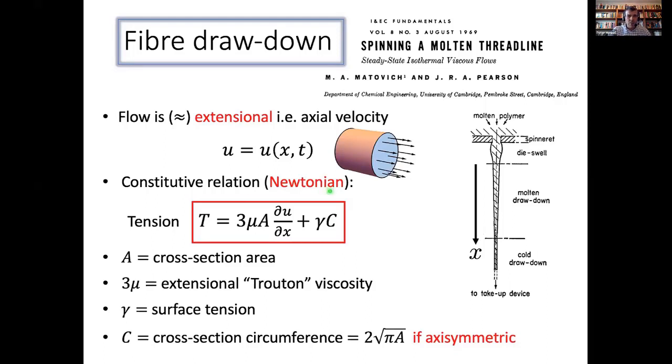And then you've got a constitutive relation between the tension in the fibre and the rate of extension. And notice I'm sticking to Newtonian fluids. So glass is very close to being Newtonian, molten glass. Though obviously when you're talking about polymers, there's important non-Newtonian effects. And I think we're going to be hearing a bit more about non-Newtonian fluid dynamics later today. So this is the constitutive relation you get. It involves this viscous contribution. So mu is a viscosity, a is a cross-sectional area of the fibre. And this is the rate of extension of the fibre. And there's a contribution from surface tension as well.